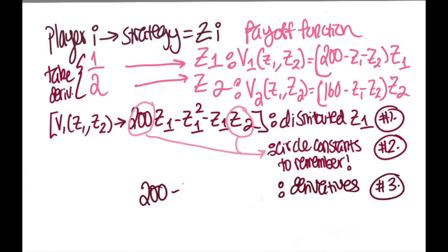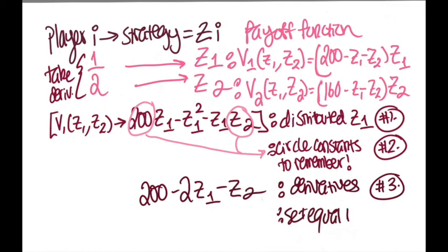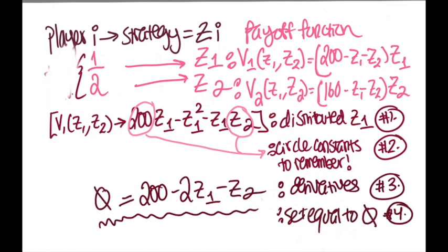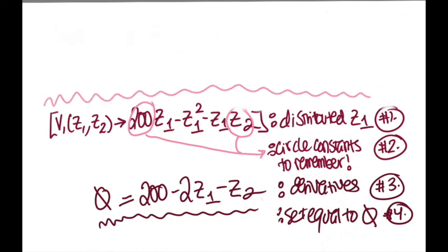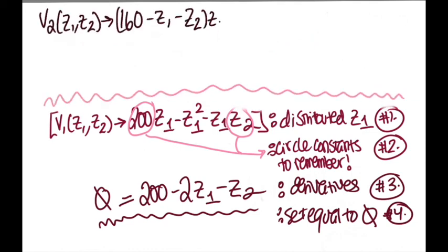After taking the derivative, this is the function that we should get, which represents the best reply function for player 1. We set this equation equal to zero and repeat the same steps for player 2's payoff function to find its best reply function.